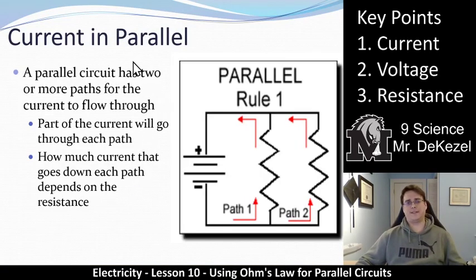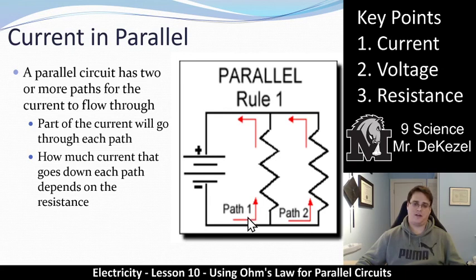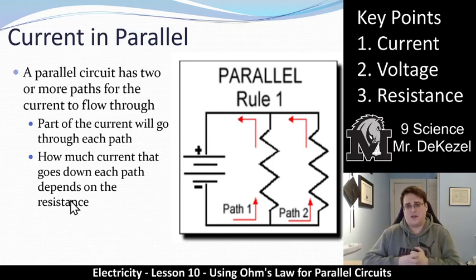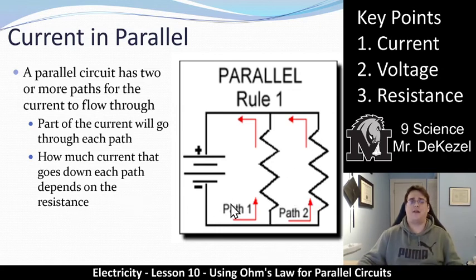We're going to talk about current in parallel circuits first. When we have a parallel circuit with resistors in parallel, there are two pathways. A parallel circuit has two or more paths for the current to flow through, so the current is not going to be the same in the original part as it is in each path. Each path is going to have less current flowing through it — part of the current will go through each path. You can think of it like a river flowing down: there's one path and then it splits into two. Part of the river flows through each path, and how much current goes down each path depends on the resistance — how wide that path is and how many trees are in the way. How easy is it for the water to flow down that path. So the current down each path is different and it's proportional to the resistance.